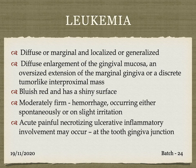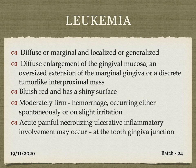Then there is systemic disease causing enlargement — the systemic disease by itself can cause the enlargement without requiring any local factors or inflammation. Leukemia is an example. It may produce diffuse or marginal, localized or generalized enlargement. The gingiva shows oversized extensions of marginal gingiva and discrete tumor-like interproximal masses that are bluish-red and shiny, moderately firm, with hemorrhage occurring spontaneously or on slight irritation. Acute painful necrotizing ulcerative inflammation may occur at the tooth-gingival junction.